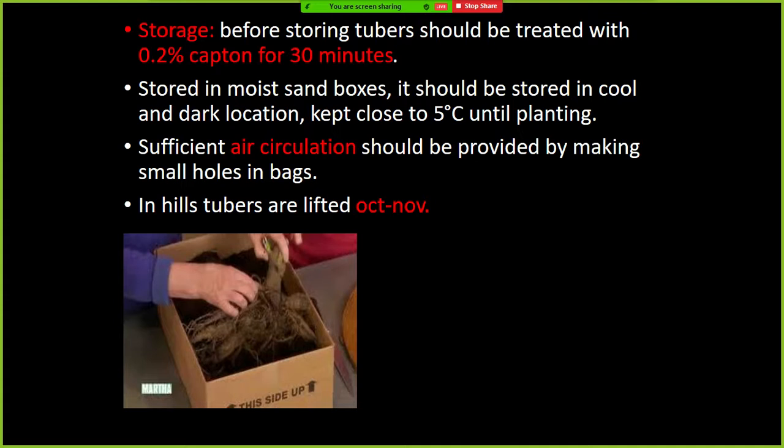The major air pollutant for Dahlia is sulfur dioxide — if SO2 is more in the air, the leaves will become chlorotic. The major disease is powdery mildew. The method developed in India for flower preservation is the late cutting method — if the option is late cutting, go for that.